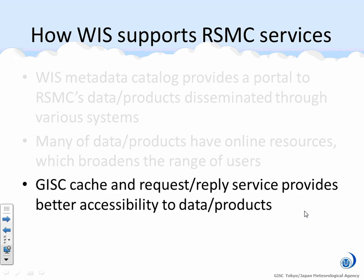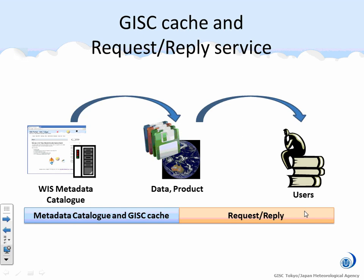Next point: DISC cache and the request-reply service provide better accessibility to data products. If the data or product is globally exchanged data and available in DISC cache, the user can download it from there. In DISC Tokyo Portal, users can download data files manually and also use a subscription interface for automatic download. At last, the user can get the data they want from WIS.